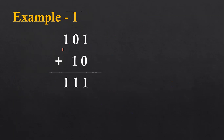Here you can see the first number is 101 and the second number is 10. Both numbers are binary numbers. If we apply addition, we have to add 1 with 0 — result will be 1. Then adding 0 and 1 in the second column, result will be 1. For the third column, the value is 1 and in the second number there is no value, so result will be 1. So finally the outcome is 111.